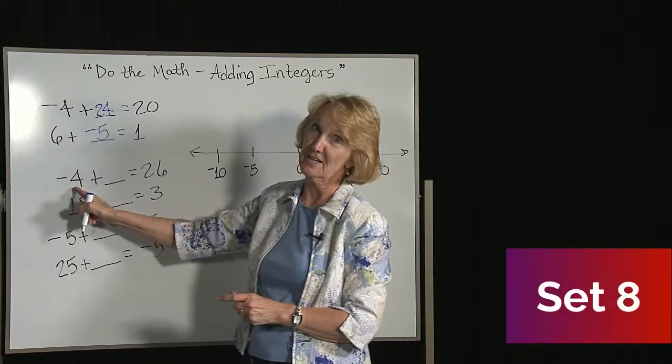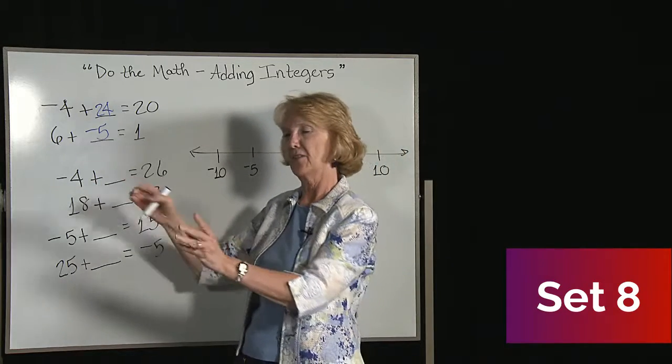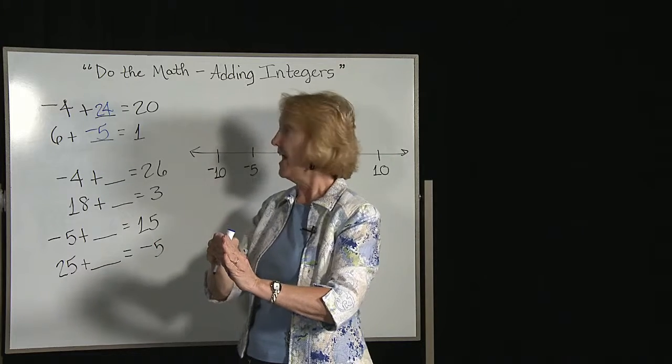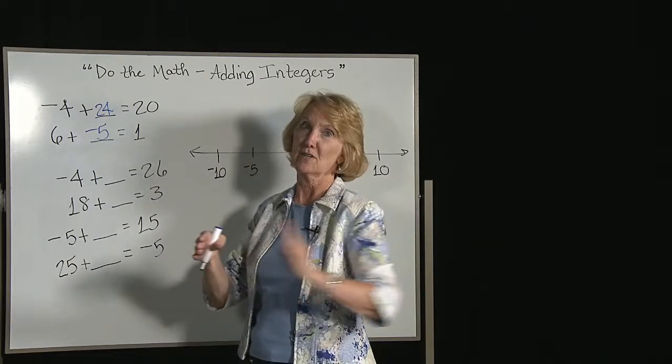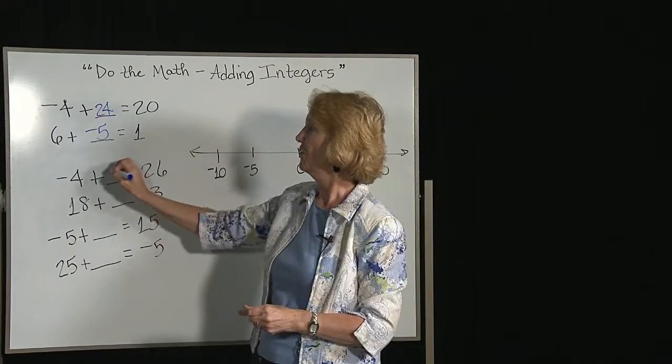On this one, we start out in the negatives and we end up with a positive, so we must have added a positive. To get from negative 4 to 0 means you added 4, and then to get from 0 to 26 means you added 26, so 4 plus 26 would be 30.